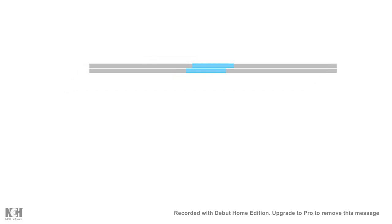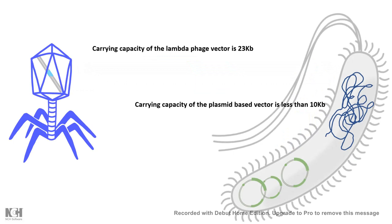This is a super convenient method because with plasmid, we can only clone up to 10 KB, whereas in the case of the lambda fudge vector, we can clone around 23 KB pairs, which is a lot more. The carrying capacity of the lambda fudge vector is way more than the plasmid — that's the advantage of the lambda fudge cloning system. The only disadvantage is that it's a little harder to grow them in bulk, but with advancements in cloning technology we can grow them on bacteria, so that disadvantage is also nullified.